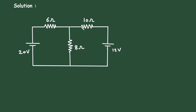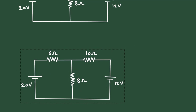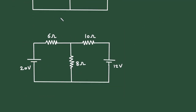First of all, we can convert this voltage source into its equivalent current source. Also, we can convert this other voltage source into its equivalent current source. Let's convert them into their equivalent current sources. Here we can see the 10 ohm resistor is connected in series with this 12 volt voltage source. When we convert this voltage source to a current source, the 10 ohm resistance will be in parallel.